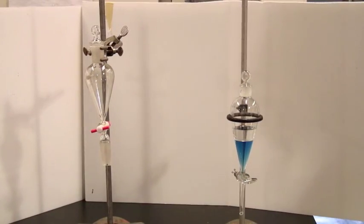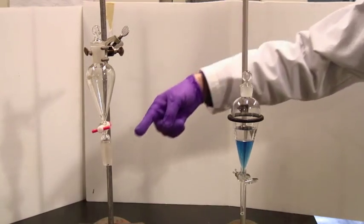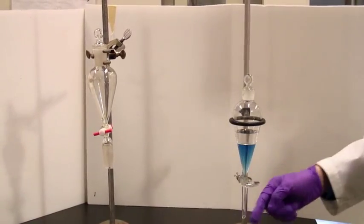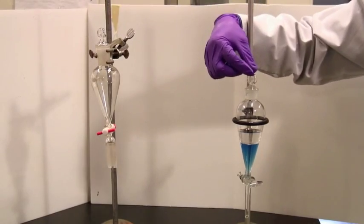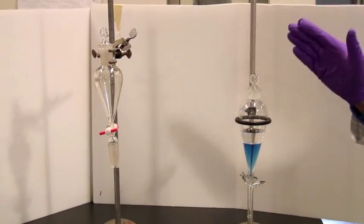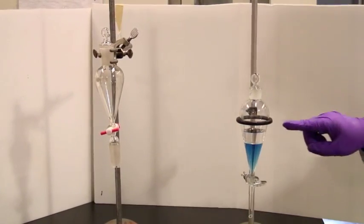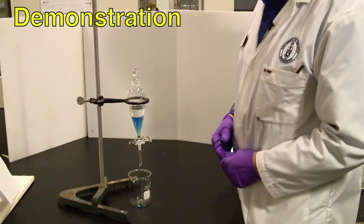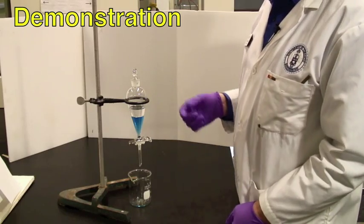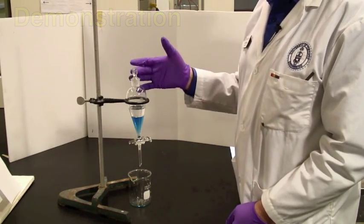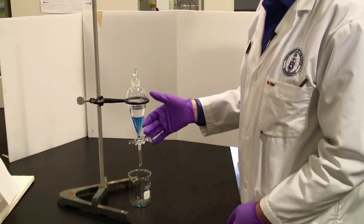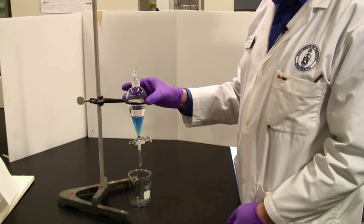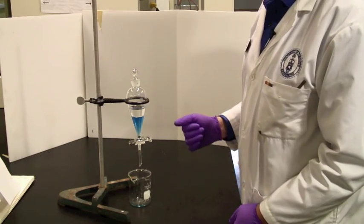There are two different kinds of separatory funnel. This one has a different nozzle and they've also got slightly different caps. They are completely equivalent. You can also hold them in two different kinds of clamp. Separatory funnels are usually pear-shaped and the ones that we have in the lab have two different kinds of spout, as you've seen, and they can either sit in a ring clamp or a three-finger clamp.